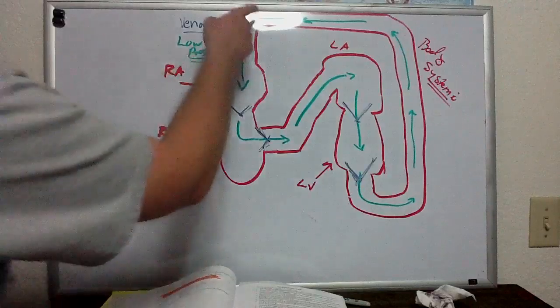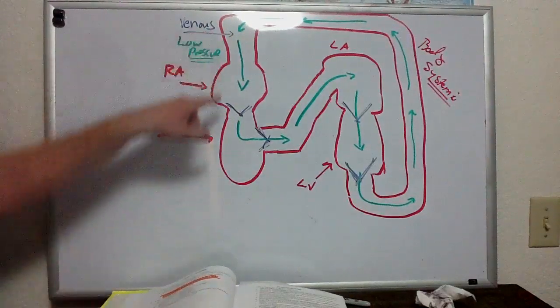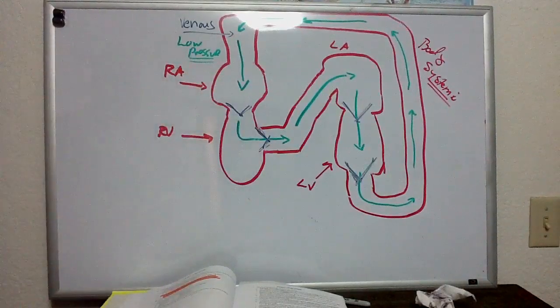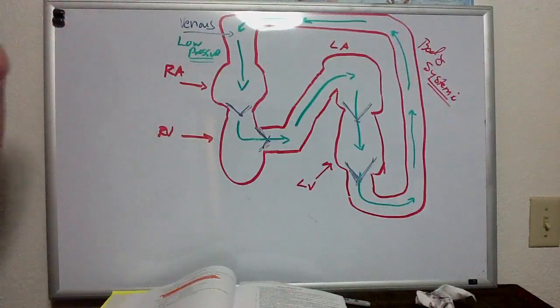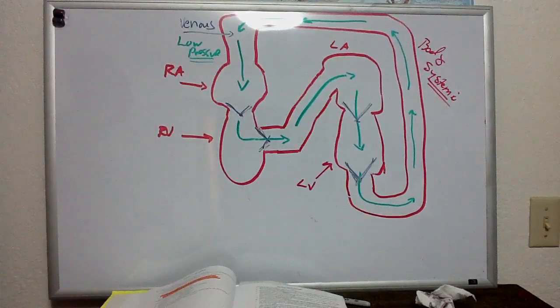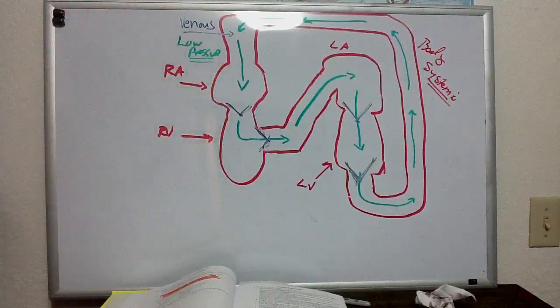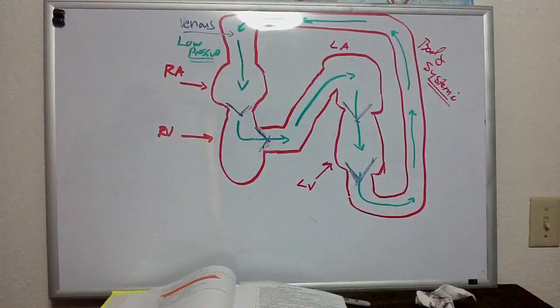So it goes into the right atrium. And then from the right atrium, the right atrium pumps it into the right ventricle. And remember the atria accepts the blood. And the atria are very important because what they do is they pump blood down into the ventricles and they preload the ventricle. The atria loads the ventricle up with blood.